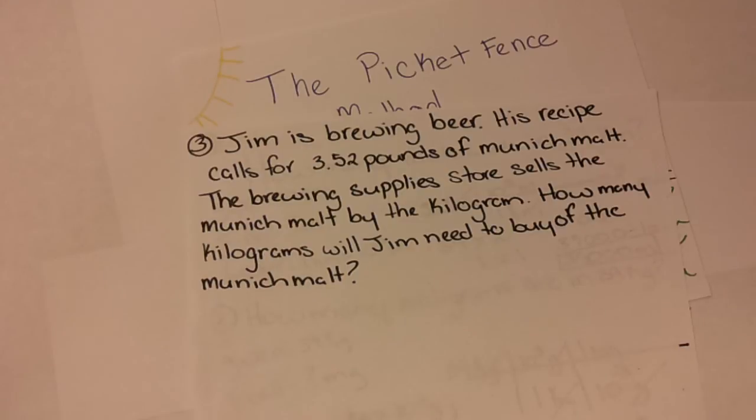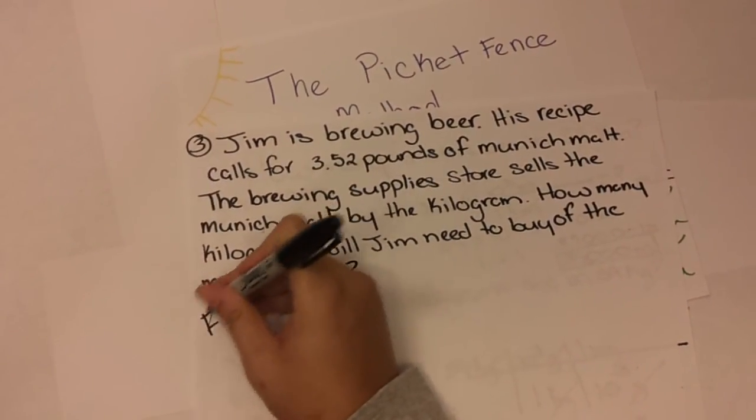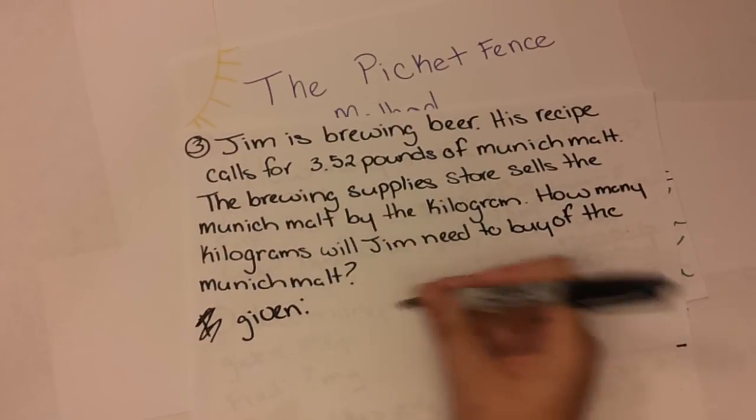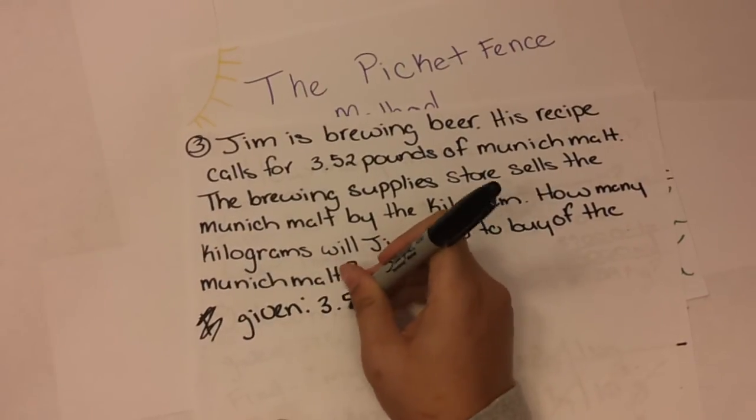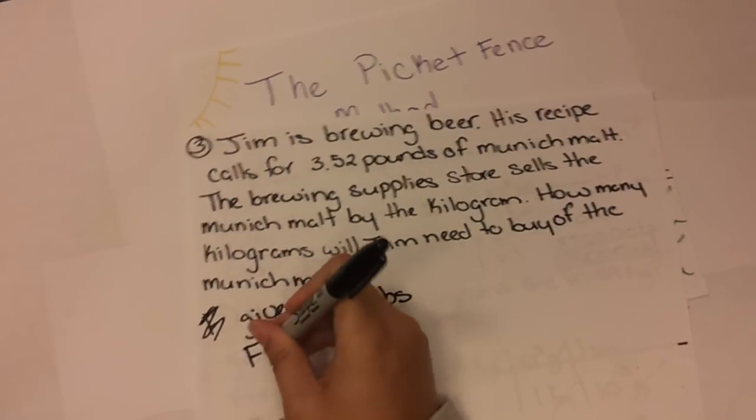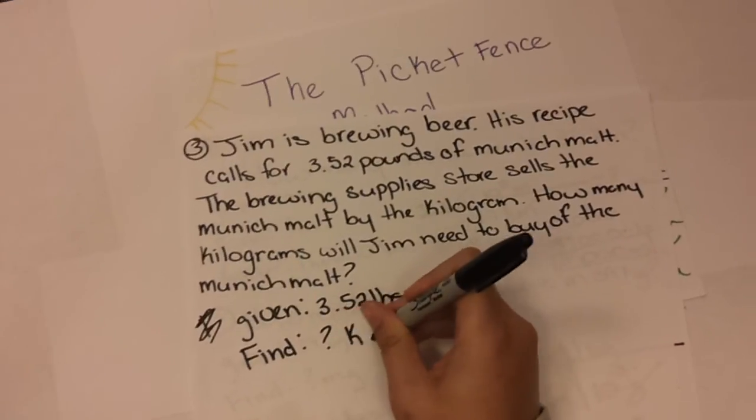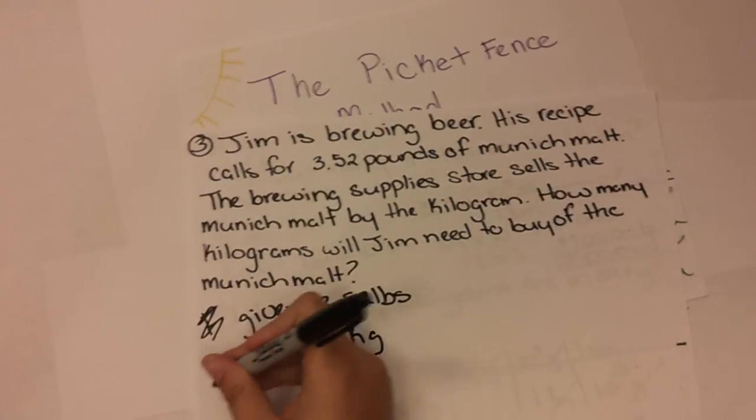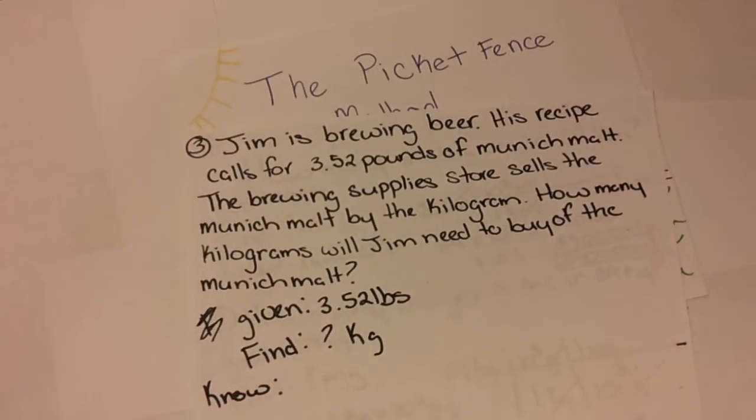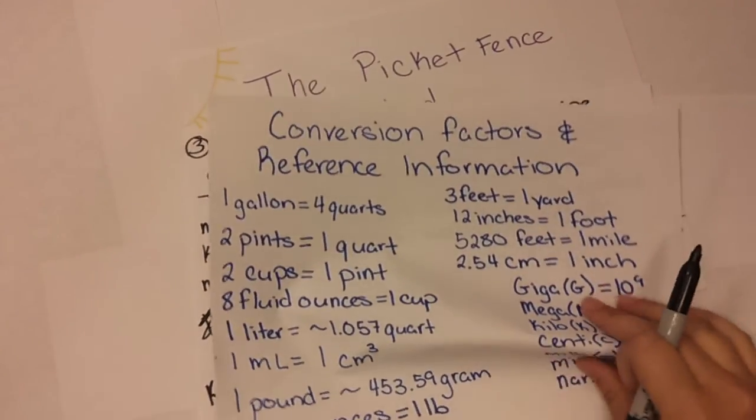Okay, so we're going to go about this the same way we did the others. We're going to enter in our given information, which is 3.52 pounds. We need to find how many kilograms. And what do we know? Well, using our conversion reference information, we're going to find out what we know.